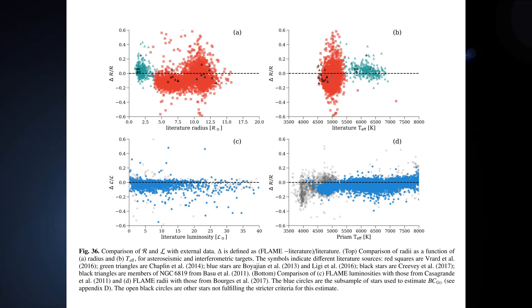In terms of the radius and luminosity results, summarized in figure 36, the top panel shows the fractional uncertainty in our estimated radius as a function of literature radius for different literature samples, showing some evidence for a negative bias. Panel B shows the same as a function of literature temperature. The bottom panel shows the same but for luminosities, where again we have a slight negative bias. The reasons for this are explained in the paper.